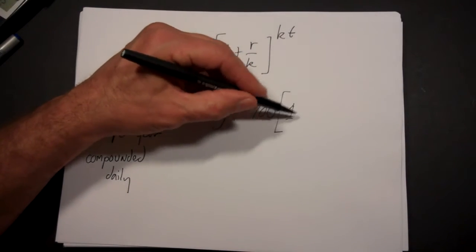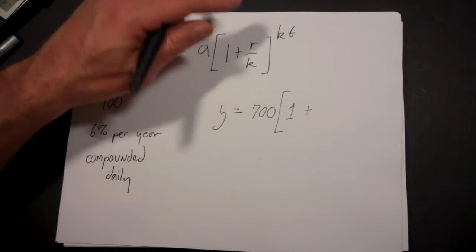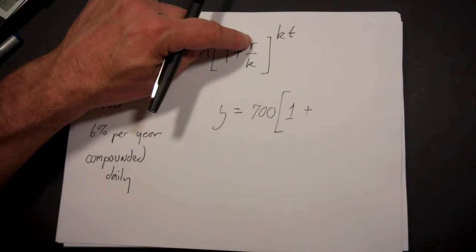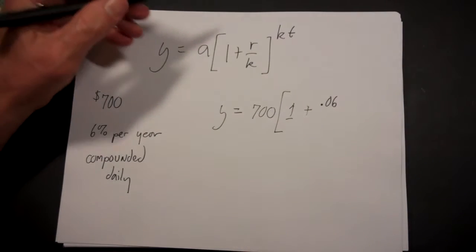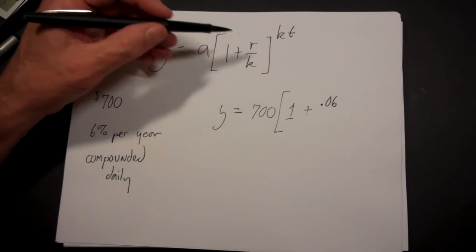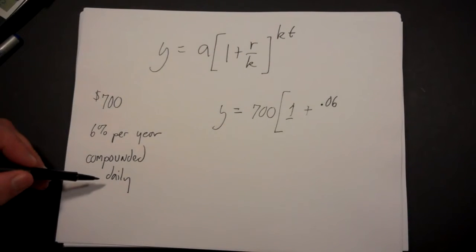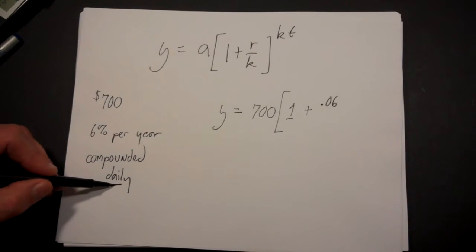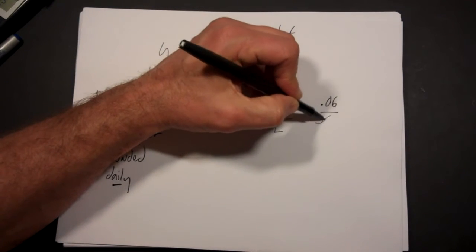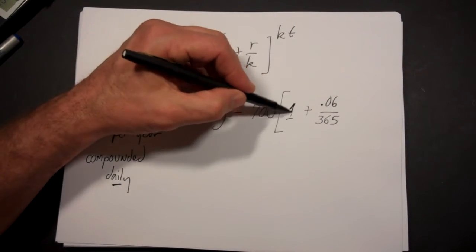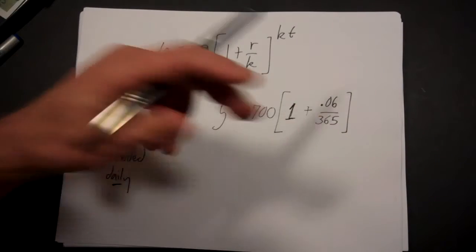Now let's do 1 plus, and let's talk about this issue of r and k. r is the interest rate, almost always per year, so that's 6%, which is .06. Now k is the number of compound periods per year. It's compounded daily, so this is simply how many days are there in a year. So that's divided by 365. Actually technically that should be 365 and one fourth because of leap years, but we'll just use 365.